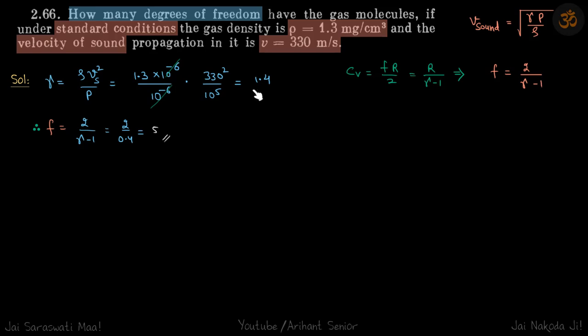So this is the value of gamma, and when gamma is 1.4, degrees of freedom is 5.